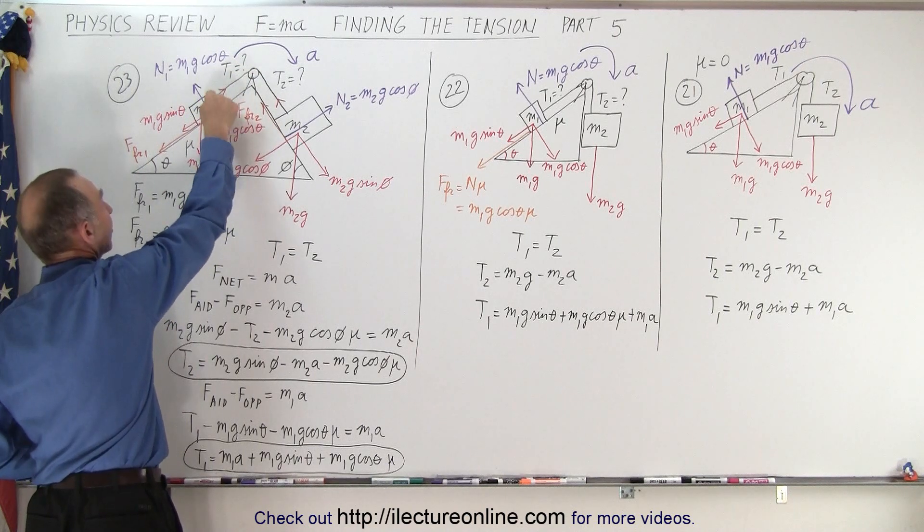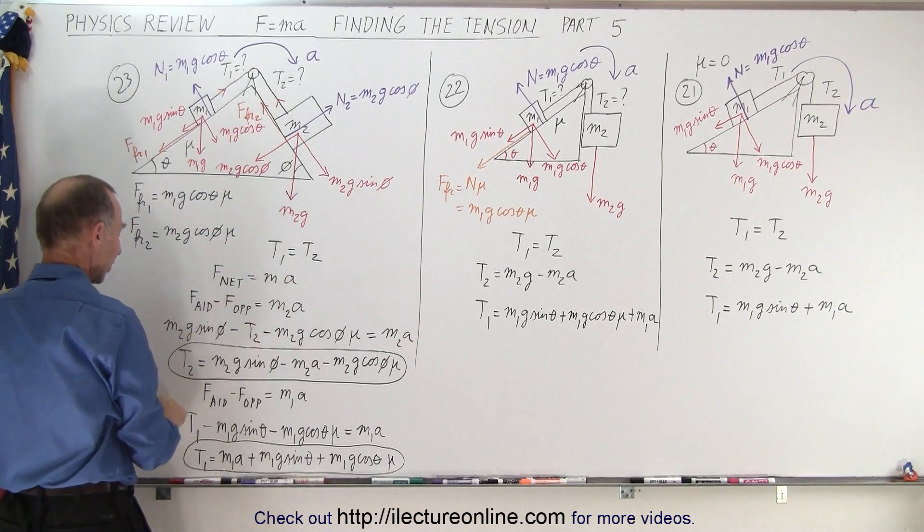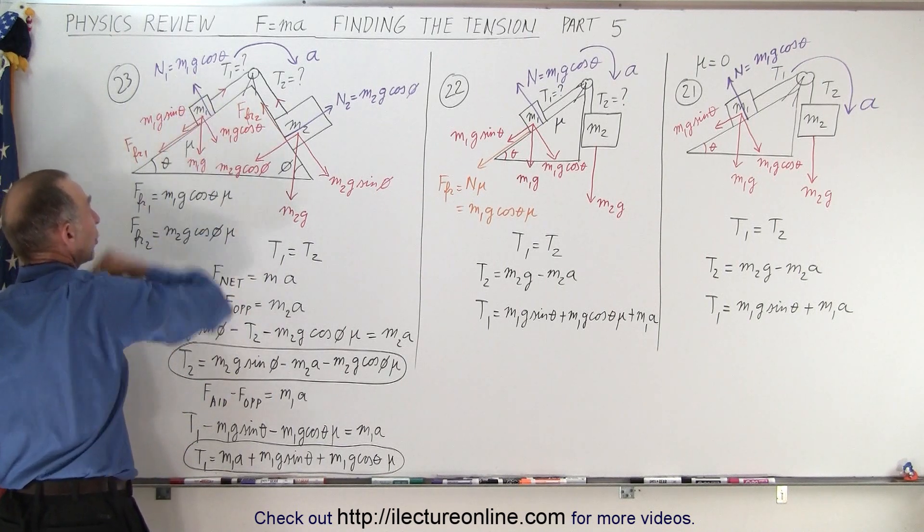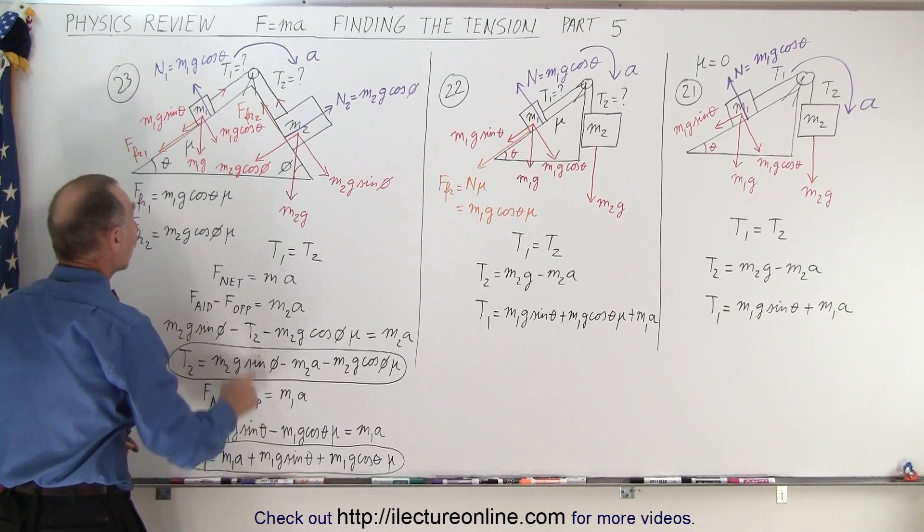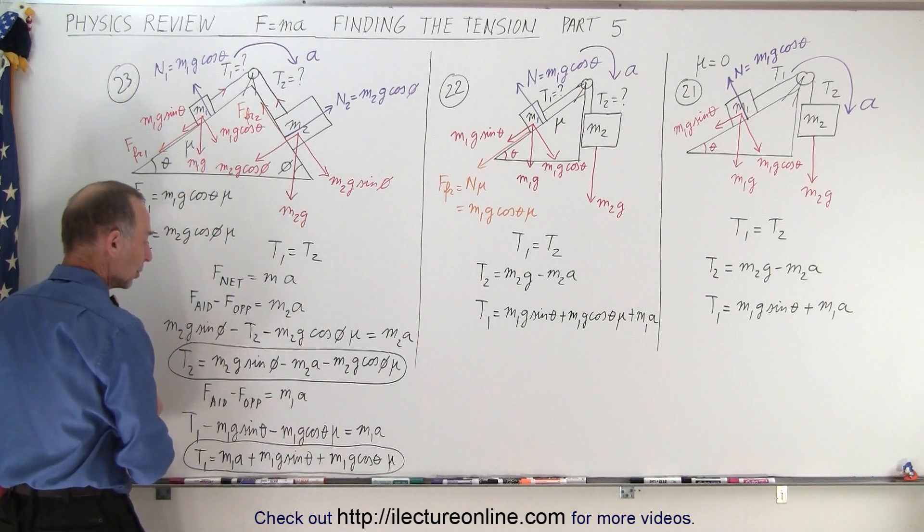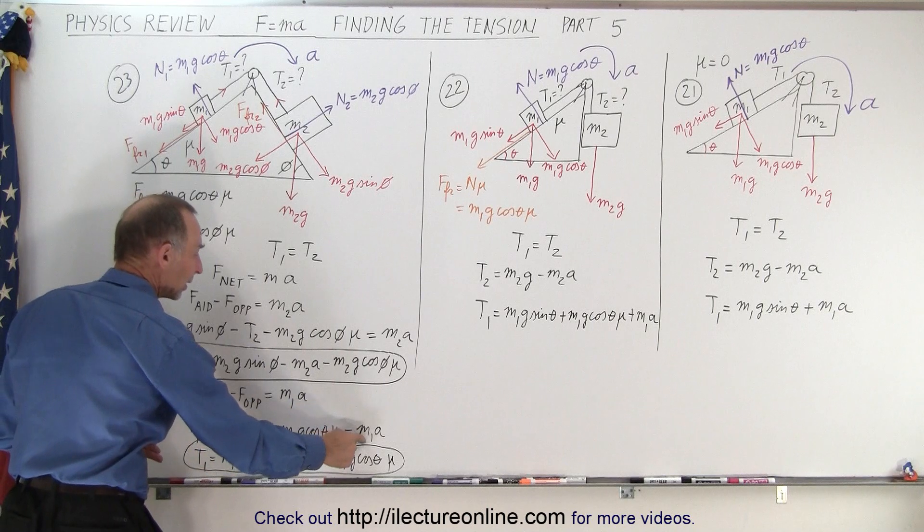The opposing force is the M1G sine theta, which is the component of the weight along the incline, and the friction force, which is M1G cosine theta times mu. The net force must equal M1A.